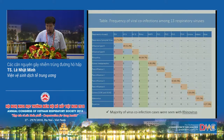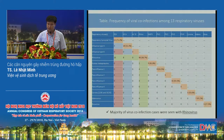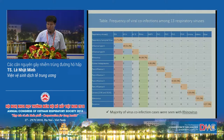This slide shows the co-infection with other viruses, comparing single infection versus co-infection for individual virus detection in our study. We can see RSV had a single infection rate of 71%, with the remaining cases showing co-infection with other viruses including influenza A, B, rhinovirus, human metapneumovirus, coronavirus, adenovirus, and bocavirus.